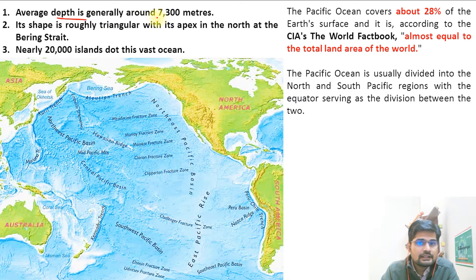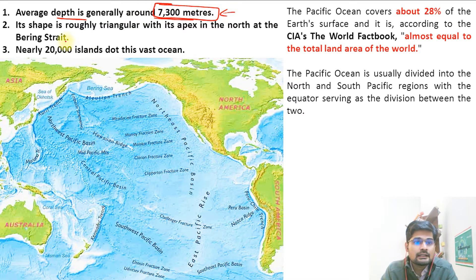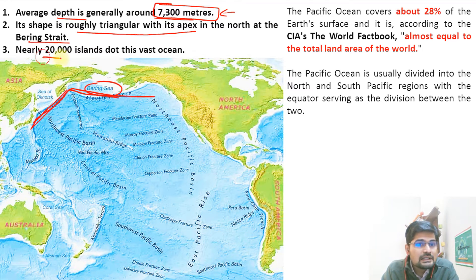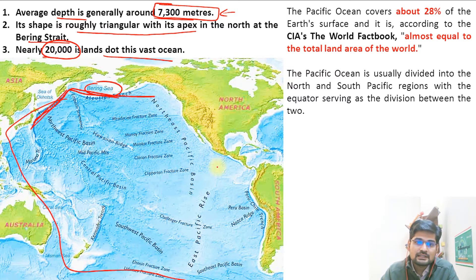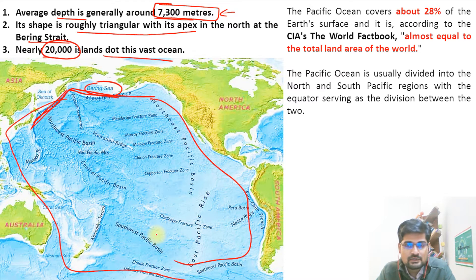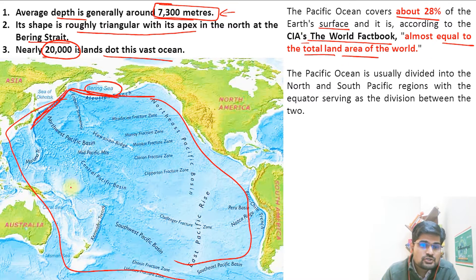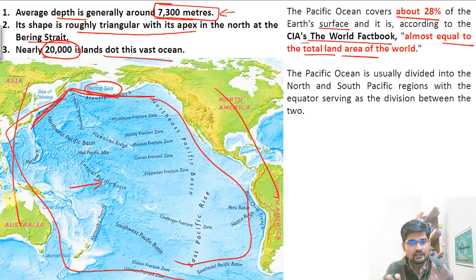The average depth of the Pacific Ocean is about 7,300 meters. It is one of the deepest oceans and its shape is roughly triangular with its apex in the Northern Bering Strait. Nearly about 20,000 islands dot this vast ocean. The Pacific largely covers about 28 percent of the Earth's surface, and according to the CIA World Fact Book, it is almost equal to the total land area of all the continents of the world.